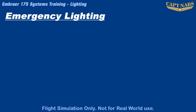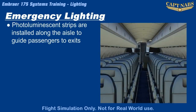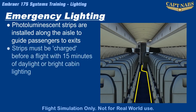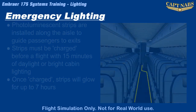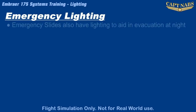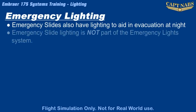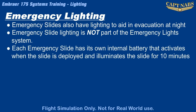In addition to the emergency lighting, the E175 also features photoluminescent strips to help guide passengers in an emergency. These strips run down either side of the aisle and lead to the emergency exits. They do not require any power but must be recharged by ambient light prior to flight — 15 minutes of exposure to either daylight or bright cabin lighting will allow the strips to remain illuminated for seven hours. Continuous exposure throughout the day will maintain the charge for operating days greater than seven hours. All emergency slides on the Embraer also feature their own battery-powered lighting that activates when the slide is deployed, remaining illuminated for at least 10 minutes.